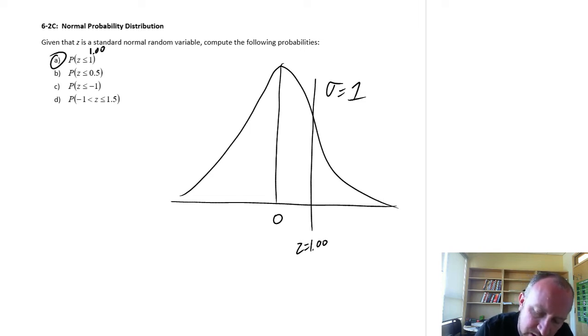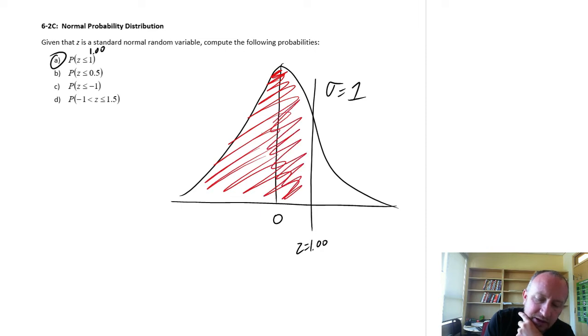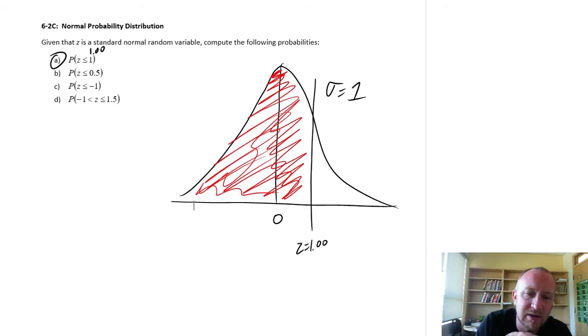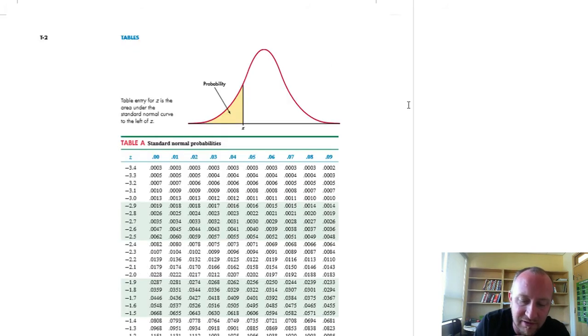z equals 1. So we want the probability that z value is less than or equal to 1. So anytime we see that less than sign, I know that I'm looking for these probabilities in the lower tail or the left-hand tail, otherwise known as the cumulative probability. And as it so happens, this is how the tables are designed.